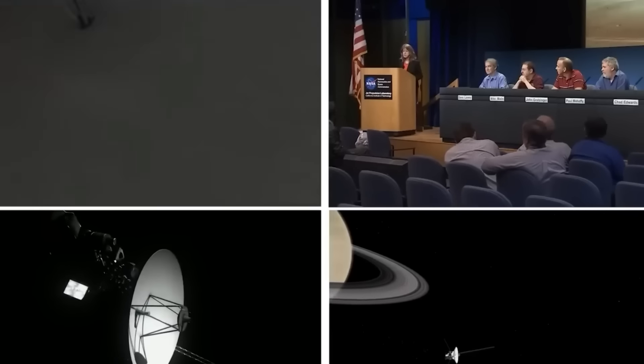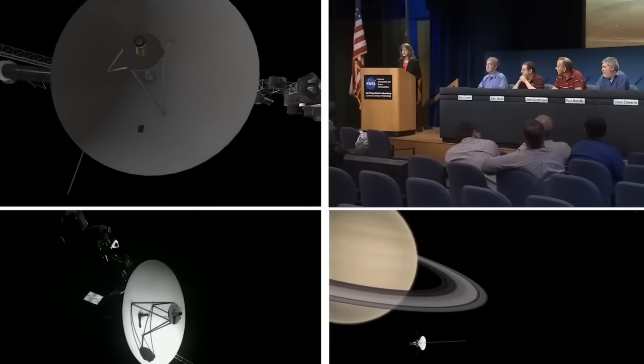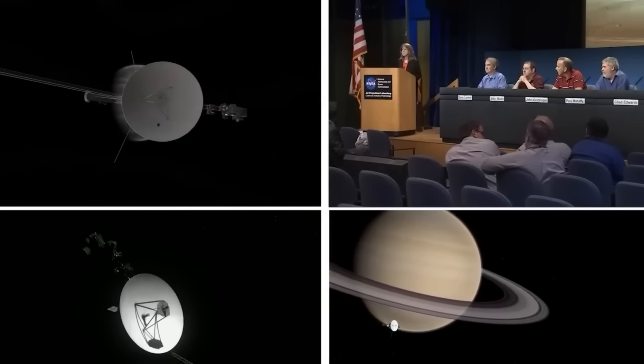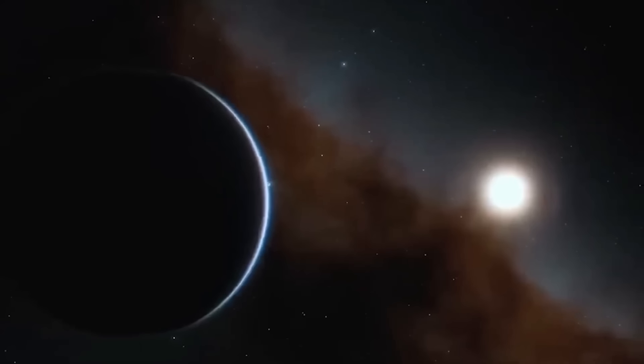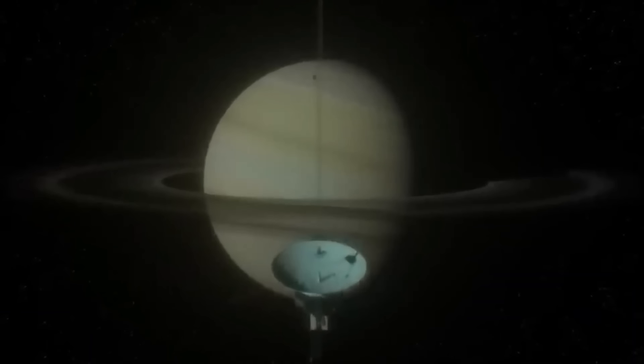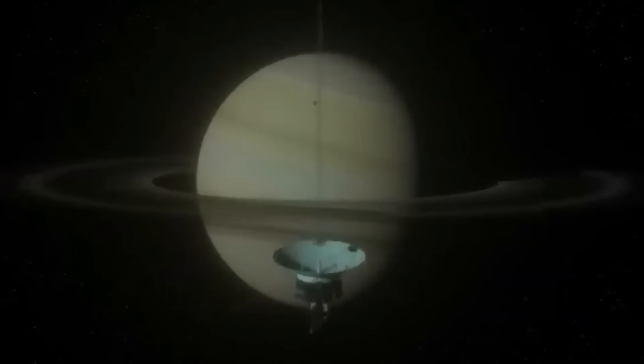Voyager 1 touched down on Saturn, its original intended destination, almost 13 years after taking off. With greater information about the planet's wind speeds and its short 10-hour days, scientists were able to comprehend it better.